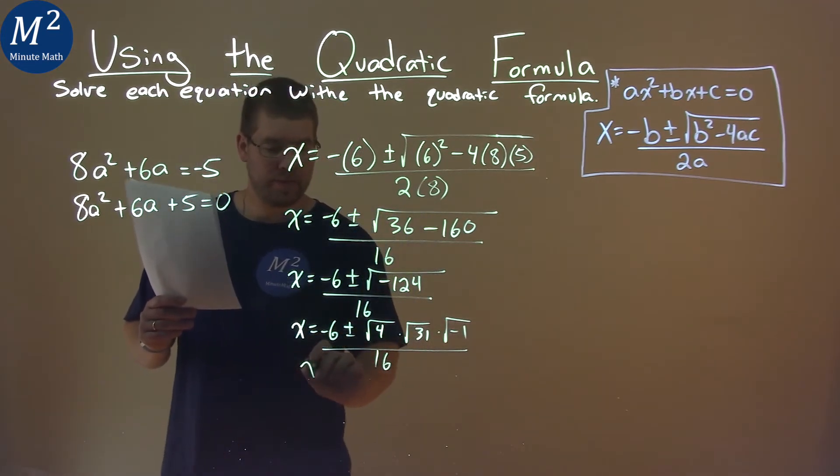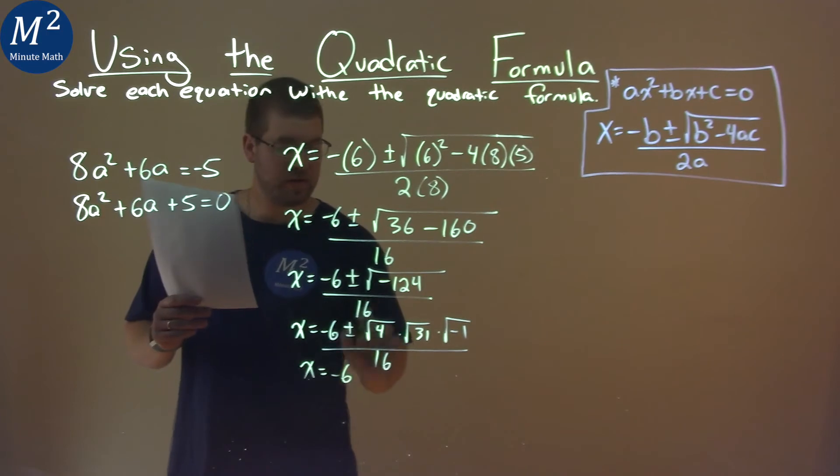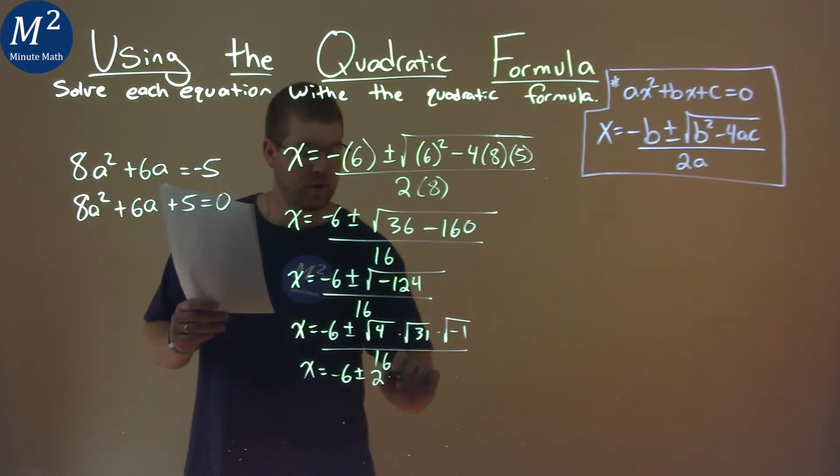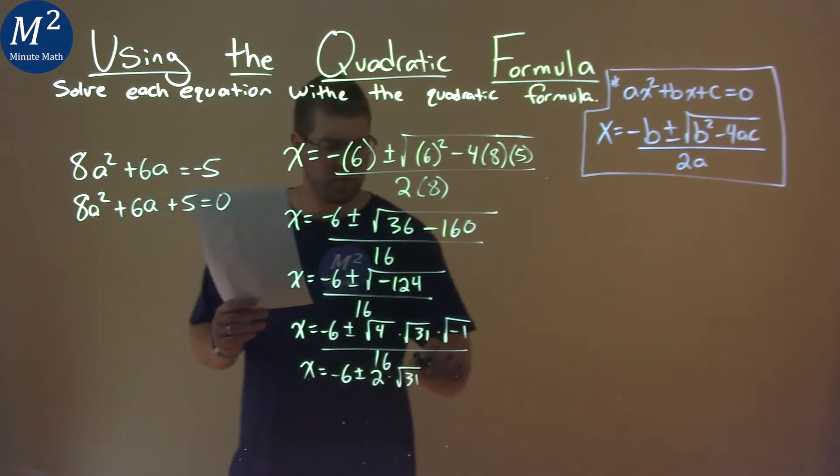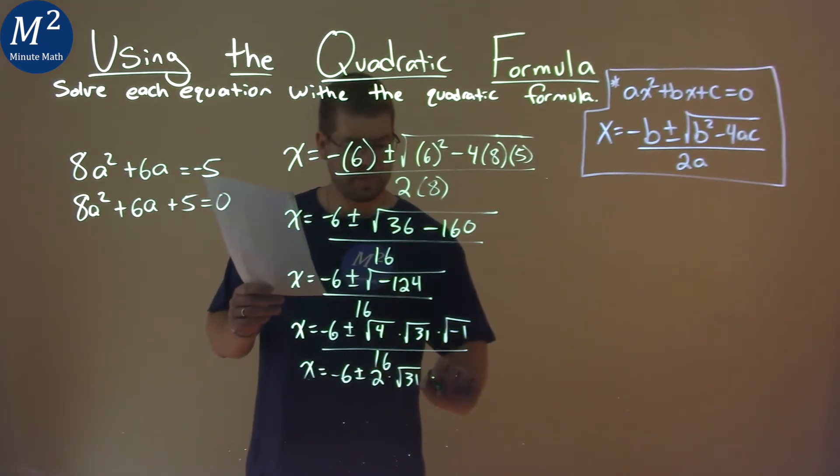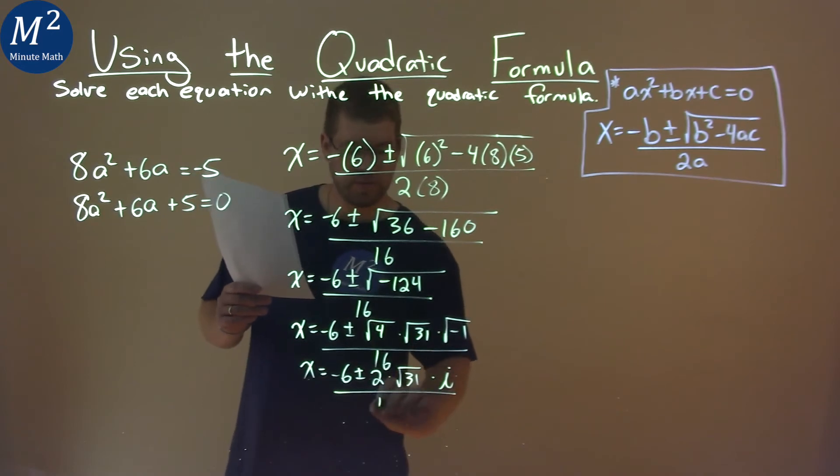Break down what we know. Now, x equals negative 6 plus or minus. The square root of 4 is 2. The square root of 31 doesn't simplify. And the square root of negative 1, that's an i, all over 16.